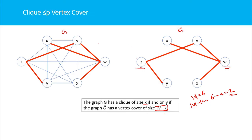So we have reduced the clique problem to the vertex cover problem. We find the complement of the graph, and the complement graph has a vertex cover of size |V| minus K if the given graph has a clique of size K. This conversion can be done in polynomial time. Since vertex cover is NP-hard and we already proved it is NP, we conclude that the vertex cover problem is NP-complete.